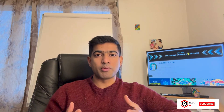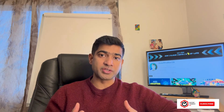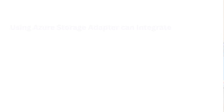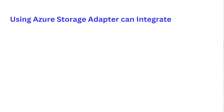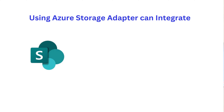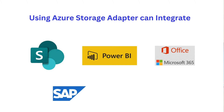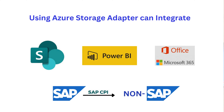Let's now talk about what are the different types of applications you can integrate using this adapter. You can integrate different applications like Microsoft SharePoint, Microsoft Power BI, Microsoft Office 365, and other Microsoft applications to different types of SAP and non-SAP applications by using SAP CPI in between.